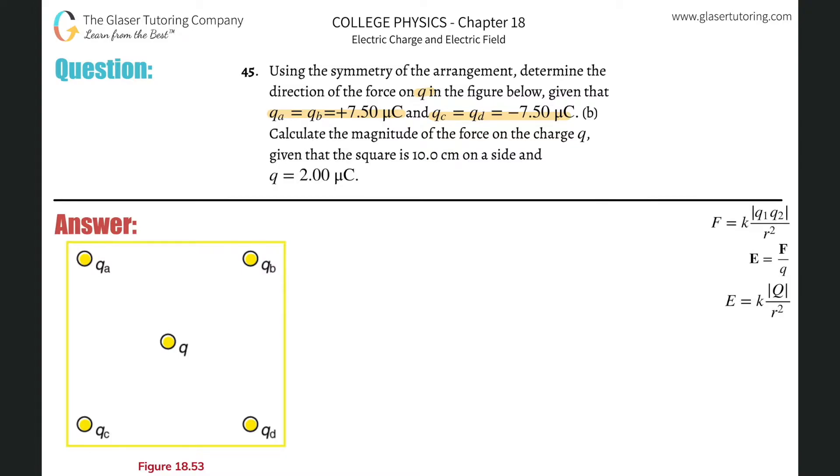We got to know what Q is, right? So Q is two microcoulombs and it's positive. So watch this. I'm going to plug in a positive here for Q. We know that QA and QB, as they told us, is also positive. So let's plug in positives there. And we also know that QC and QD are going to be negative.